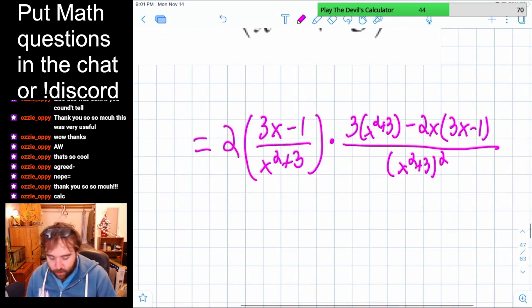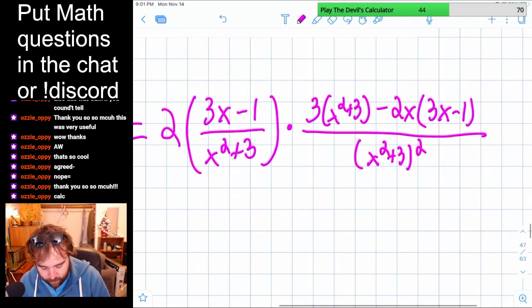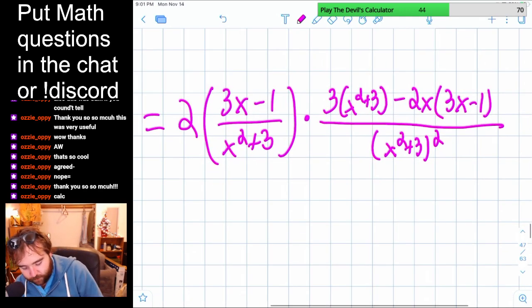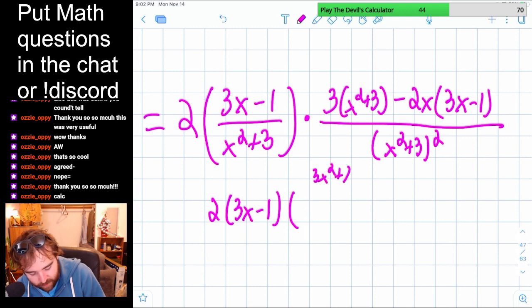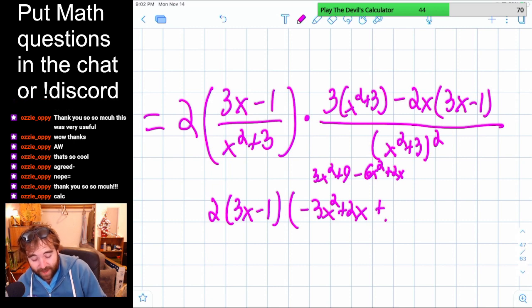So, spoiler alert, I already looked at the answer and it wasn't a very clean simplify, but it's looking familiar. So we're going to have 2 times 3x minus 1. And then what does this simplify to? So 3x squared plus 9 minus 6x squared plus 2x. So minus 3x squared plus 2x plus 9.